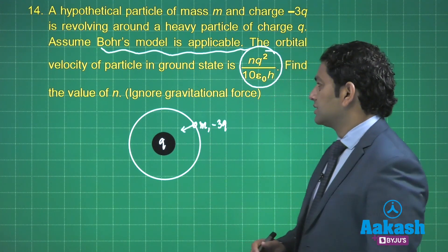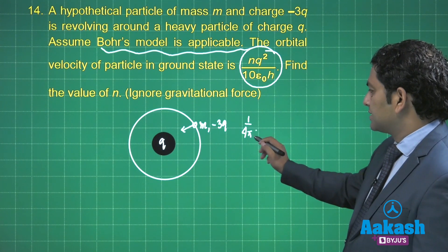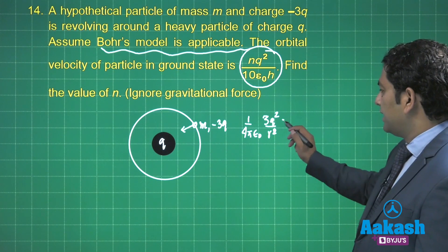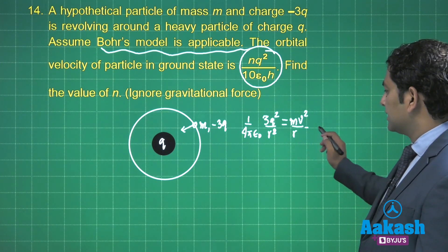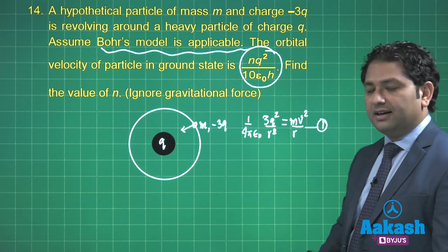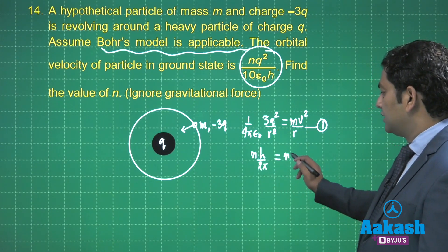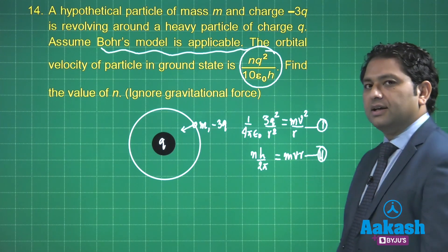This is the electrostatic force: (1/4πε₀)·(3q²/r²) = mv²/r. That's the first equation - the electrostatic force providing the centripetal. After that, nh/2π = mvr because Bohr's model is applicable.